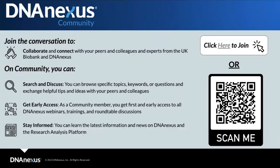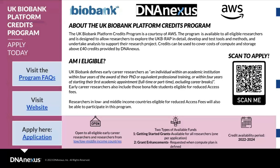I'll be dropping a link into the chat, but you can scan the QR code or navigate to community.dnanexus.com. If you are a researcher from a low or low-middle-income country, or an early career researcher, you might be qualified for the UK Biobank Platform Credits Program. This provides credits for you to work directly on UKB RAP and also allows you to get lower access fees for the Tier 3 data — that's the whole genome sequencing data we'll be talking about today.